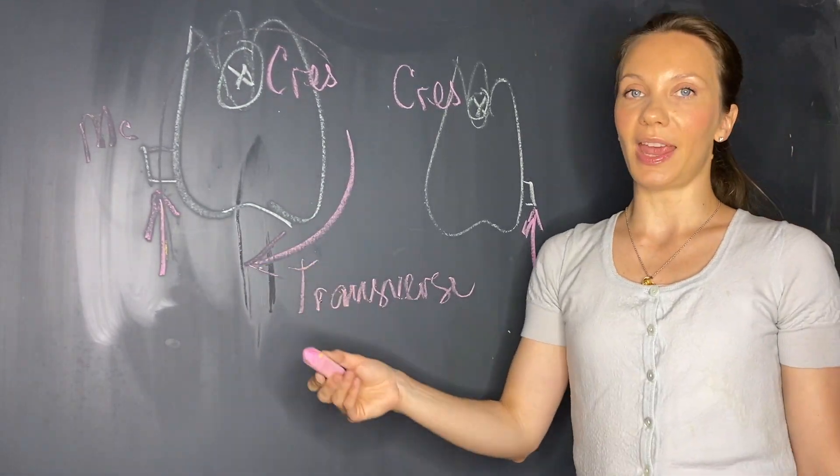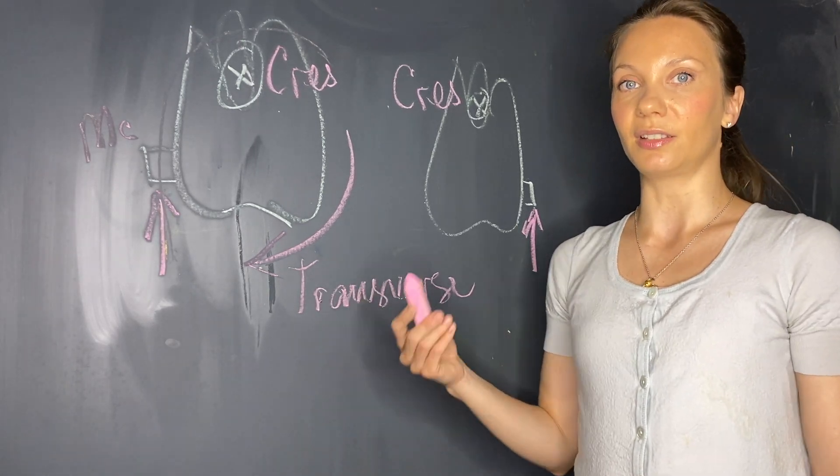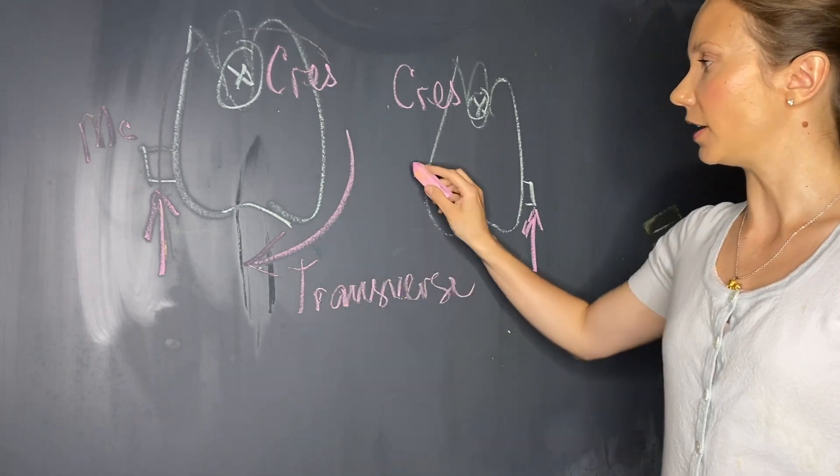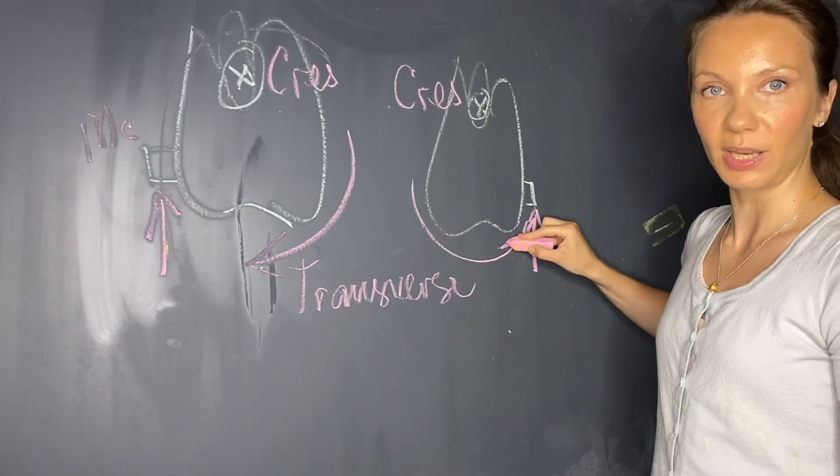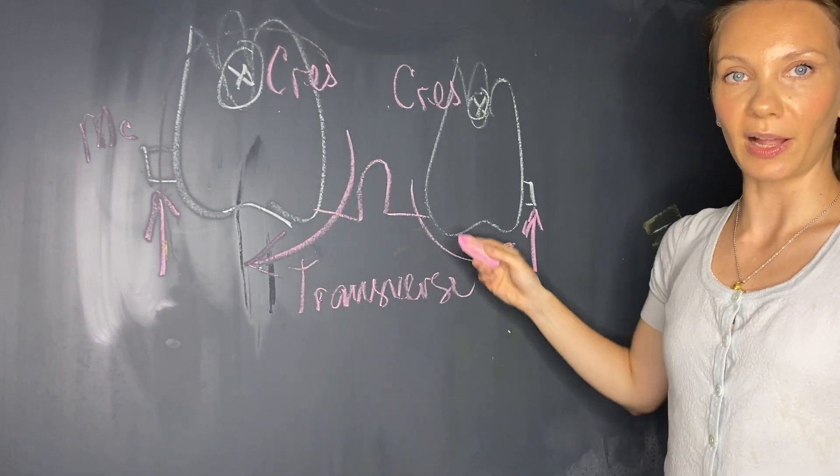This could be a desired effect, but if this is something that is unwanted, we will need to control that. In order to control that unwanted buccal crown tipping, we can place a simple transpalatal arch.